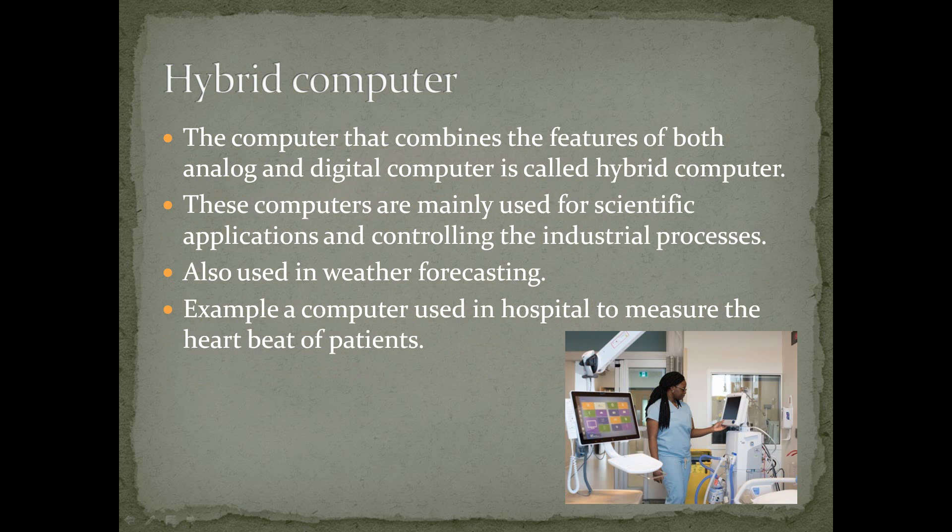The computer that combines the features of both analog and digital computer is called hybrid computer. These computers are mainly used for scientific applications and controlling the industrial process. It is also used for weather forecasting. Example: a computer used in hospital to measure the heartbeat of patients.